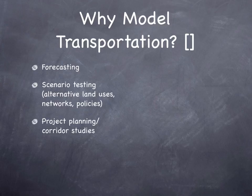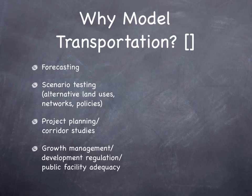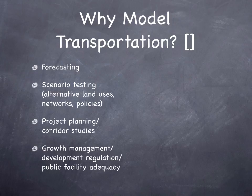Or if we implemented a different set of policies. We might use it for project planning and corridor studies — we want to predict the amount of traffic on link A as opposed to alternative B. I've used it for growth management and development regulation. We had adequate public facilities ordinances, and we needed to ensure that in a particular development pattern the links on the network met a certain level of service standards. If the level of service standards were satisfied, growth would be permitted. But if the standards were failed, growth would be put into a moratorium — no new development in that area.